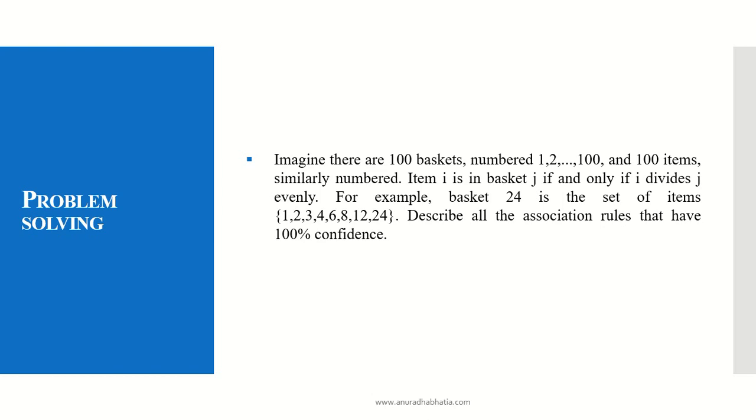For example, basket 24 is a set of items 1, 2, 3, 4, 6, 8, 12 and 24. Describe all the association rules that have 100% confidence.